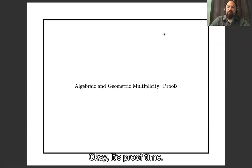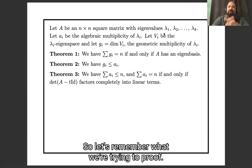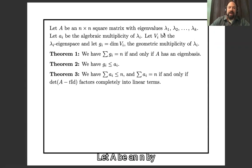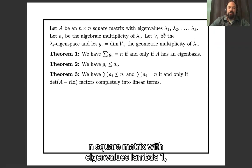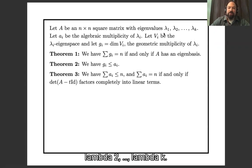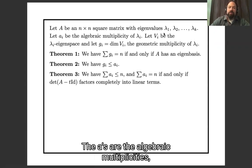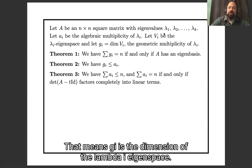It's proof time! Let A be an n by n square matrix with eigenvalues lambda 1, lambda 2, dot dot dot, lambda k. The A's are the algebraic multiplicities, the G's are the geometric multiplicities, so g_i is the dimension of the lambda i eigenspace.